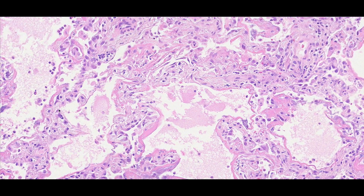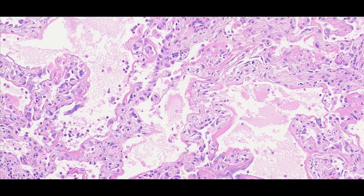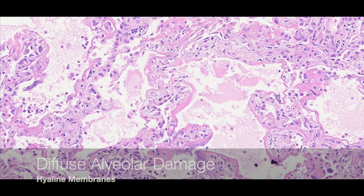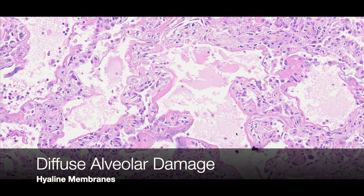This injury causes necrosis of these cells, which causes a release of debris into the air spaces, as well as activation of inflammatory markers. This then causes further leaking of serum proteins and edema fluid into the alveolar spaces, which mix with necrotic debris and surfactant proteins to form these eosinophilic hyaline membranes.